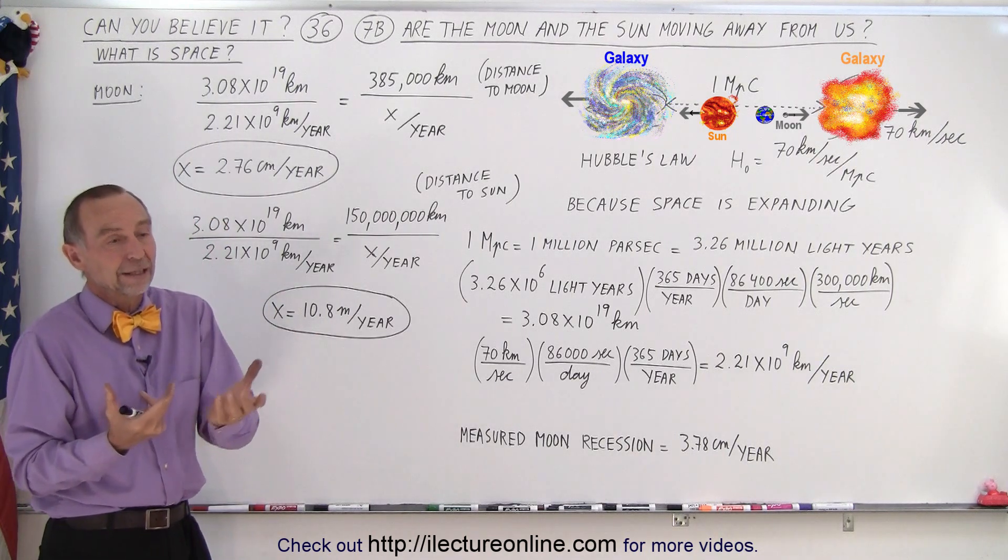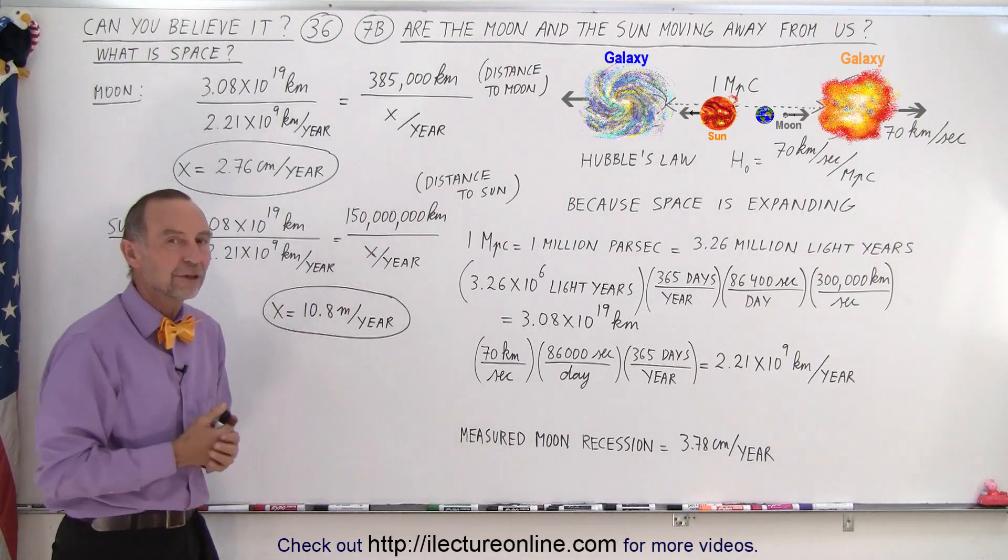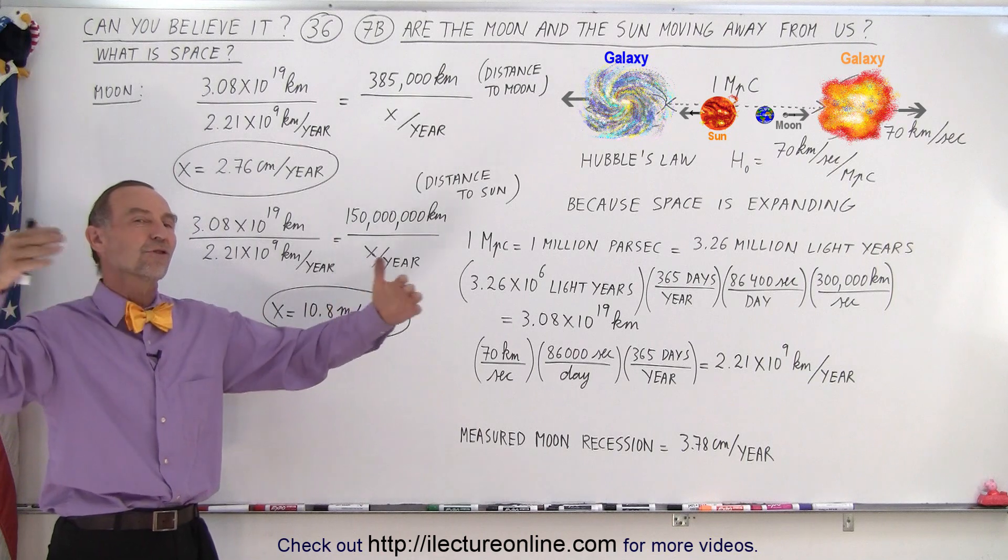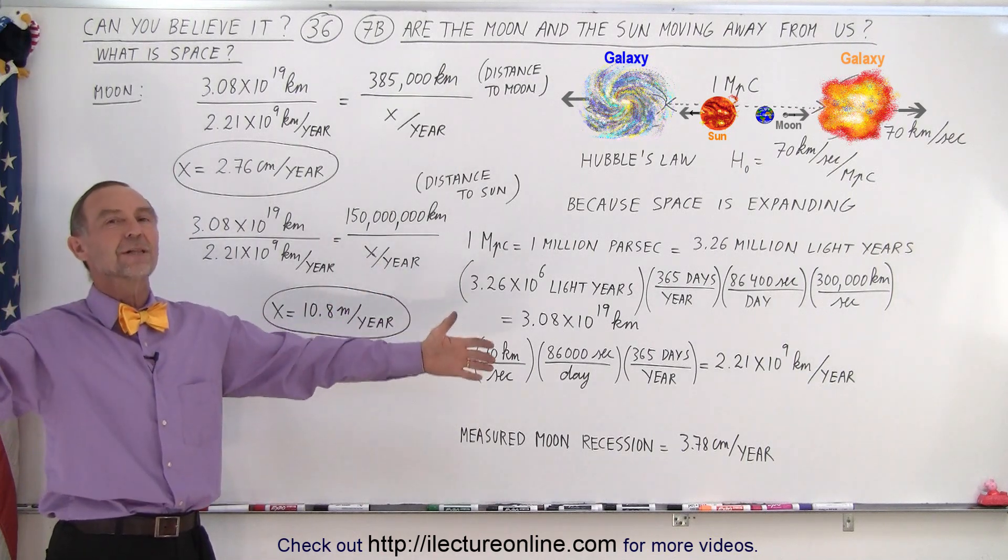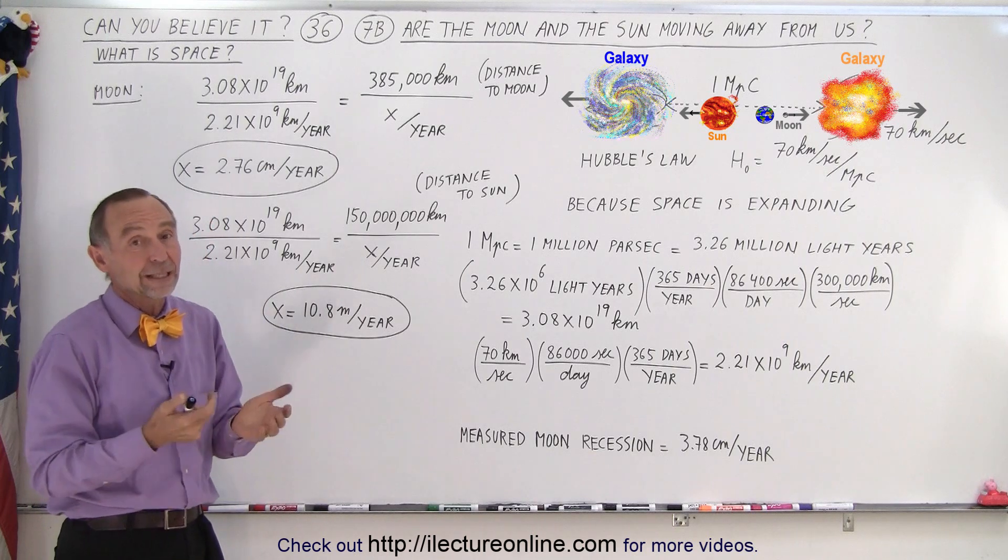And then in addition to that, the gravitational force between the earth and the sun may negate the effect of the Hubble law. The Hubble law needs a lot more space, many millions of light years in between, for the gravitational forces not to be that effective.